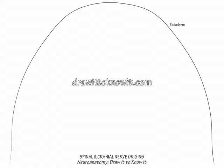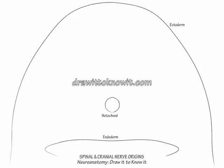First, draw a coronal section through the dorsal half of the embryo. Label the outer layer as ectoderm — it derives the epidermis and neuroectoderm. Then draw the endoderm at the bottom of the diagram; it comprises most of the ventral half of the embryo and forms the gut and respiratory contents of the developing embryo. Next, draw the notochord and indicate that it is mesoderm-derived. We have thus established the three main layers of the trilaminar developing embryo: the ectoderm, mesoderm, and endoderm.